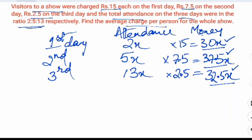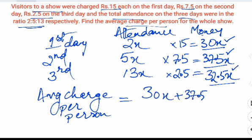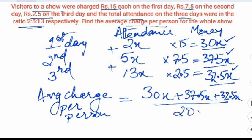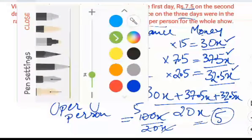So the money collected on each day: first day 30x, second day 37.5x, third day 32.5x. To calculate the average charge per person, we take total money collected — 30x + 37.5x + 32.5x — divided by total number of persons: 2x + 5x + 13x = 20x. The numerator gives 100x, so 100x ÷ 20x = 5. The x cancels and we get 5.